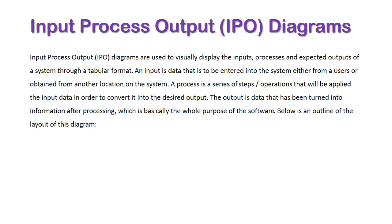An input is data entered into the system from either a user or obtained from another location. A process is a series of steps or operations applied to the data to convert the input into the desired output. The output is data that has been turned into information after processing, which is basically the whole purpose of the software.